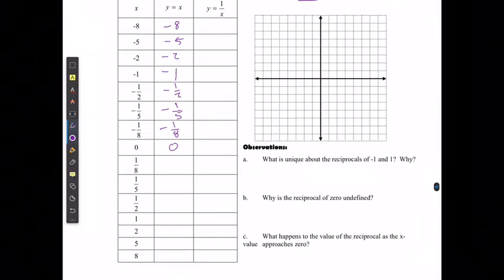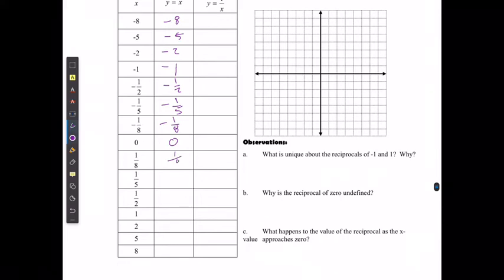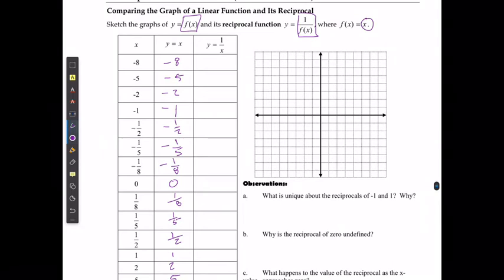0, 1 over 8, 1 over 5, 1 over 2, 1, 2, 5, and 8. And I can graph that out. And there's my original function.